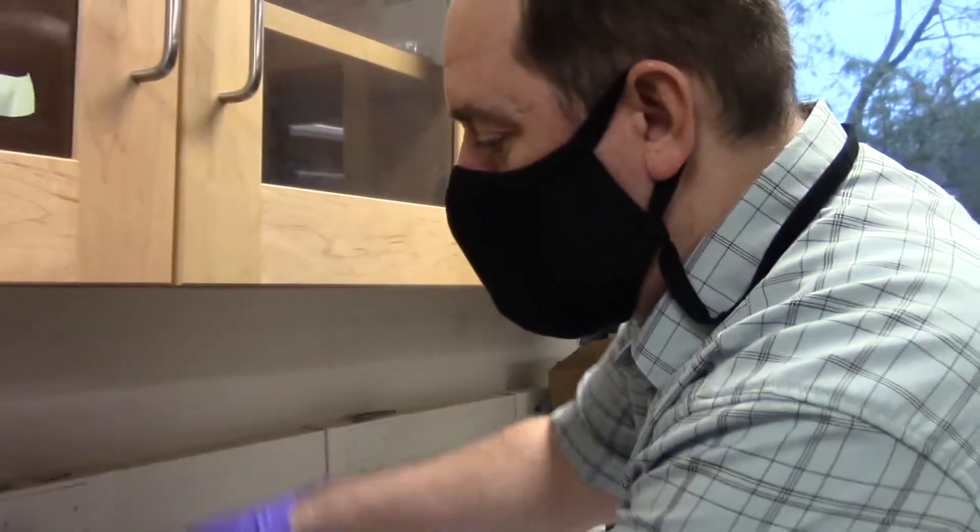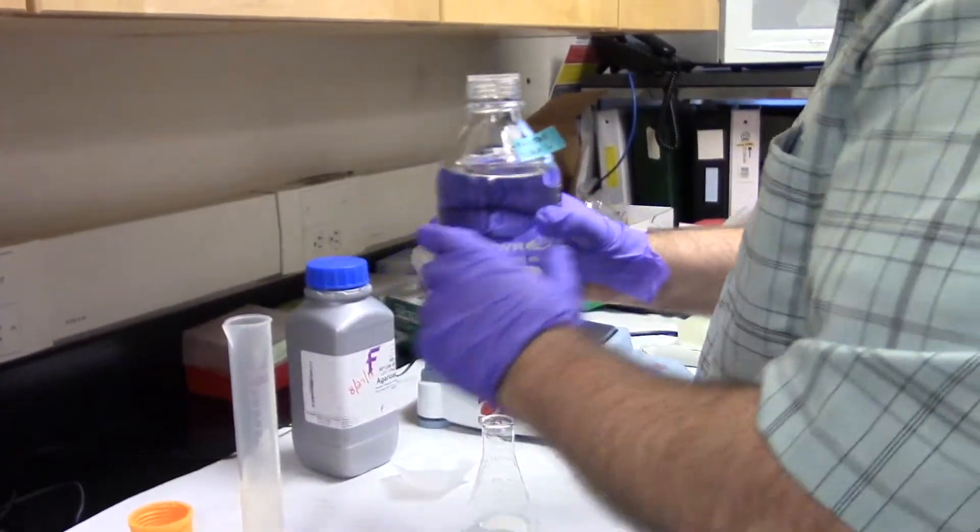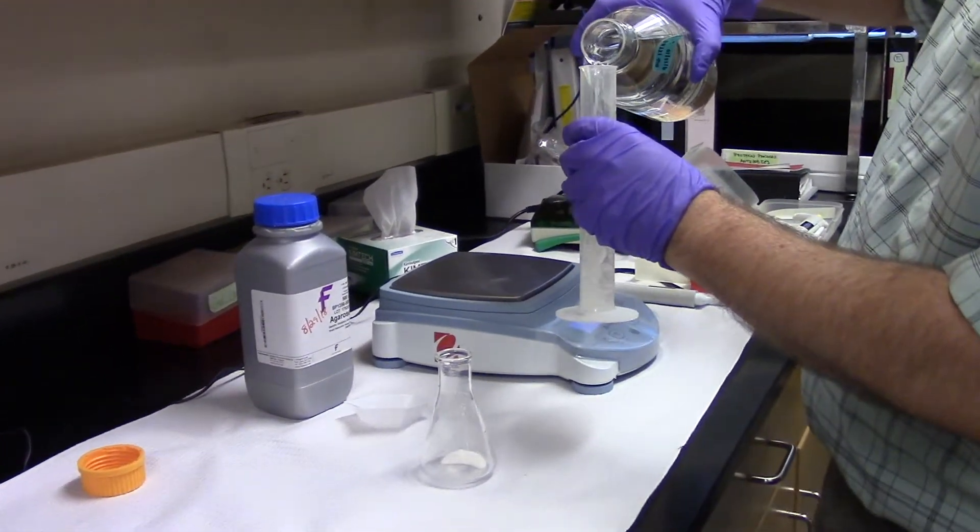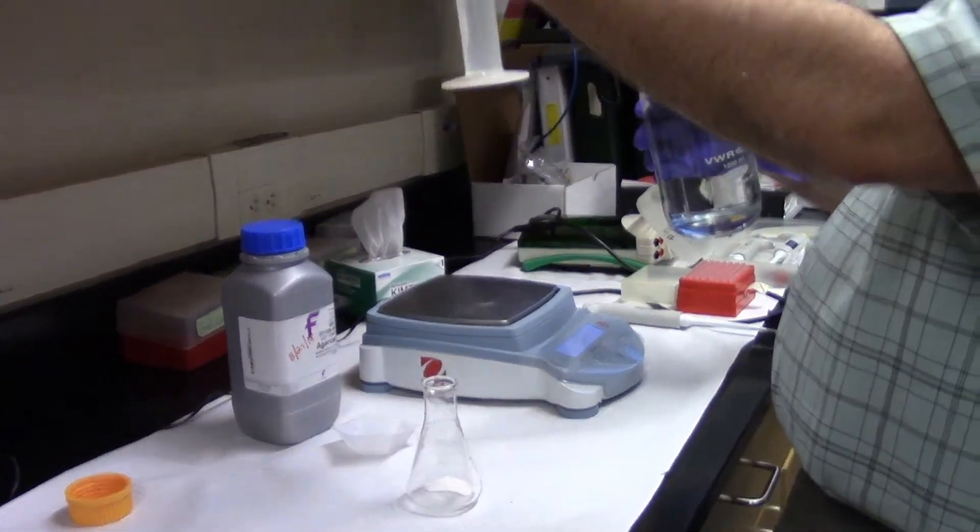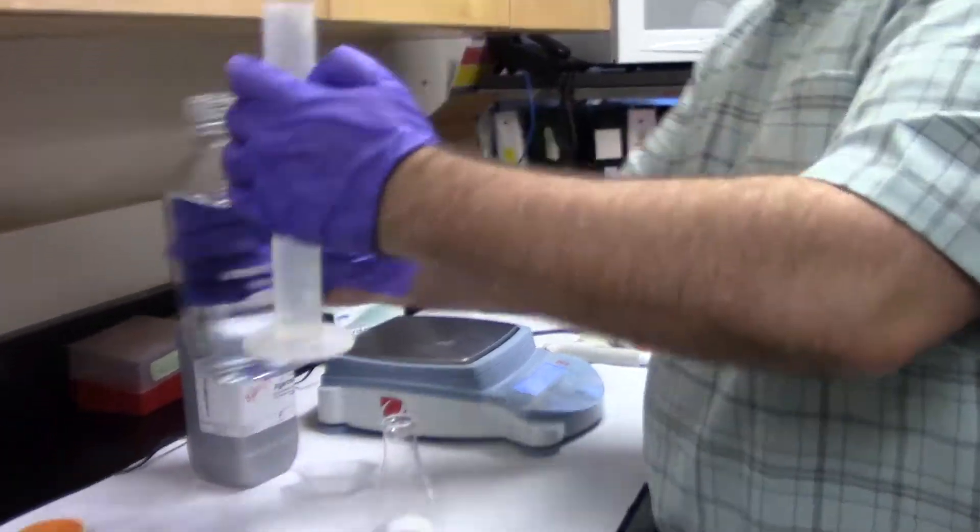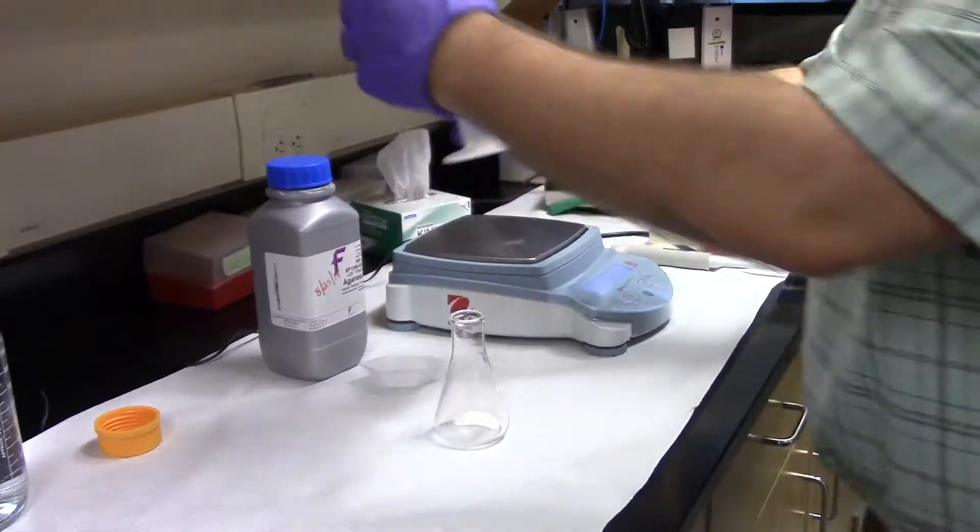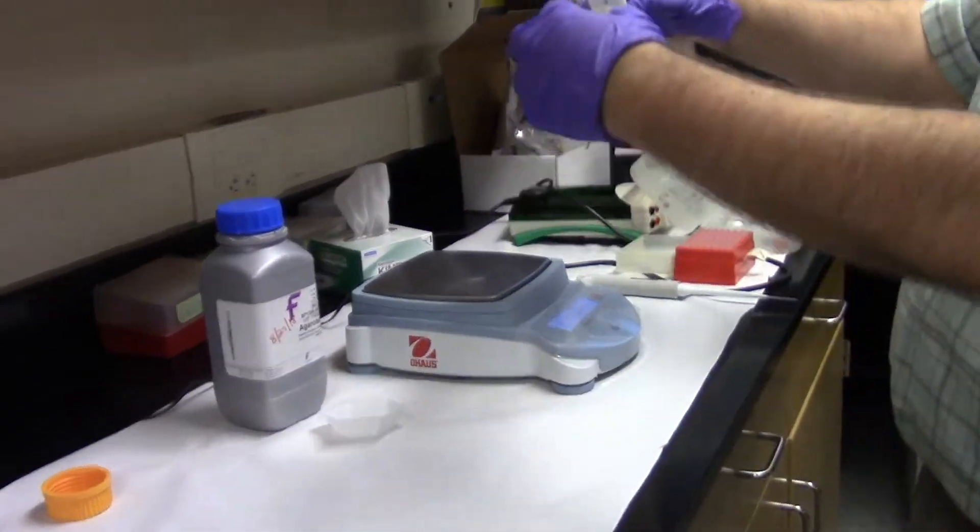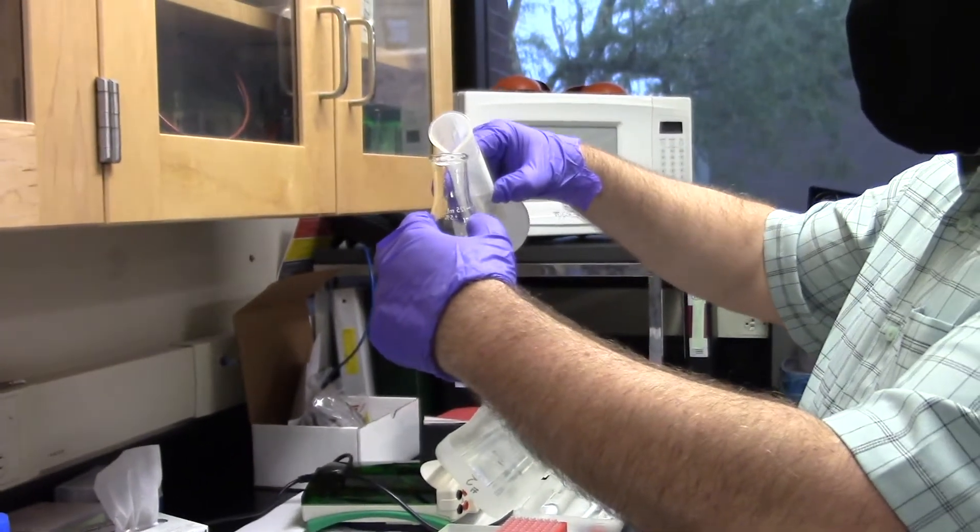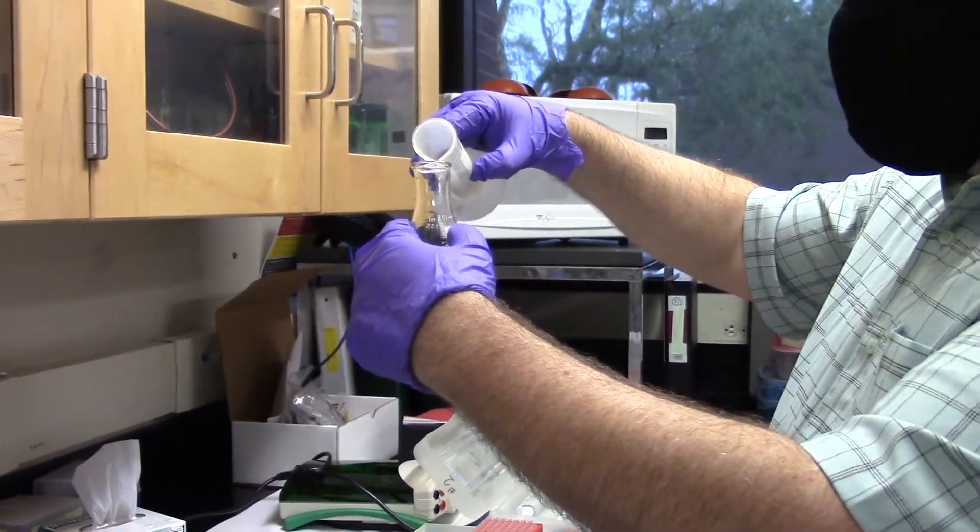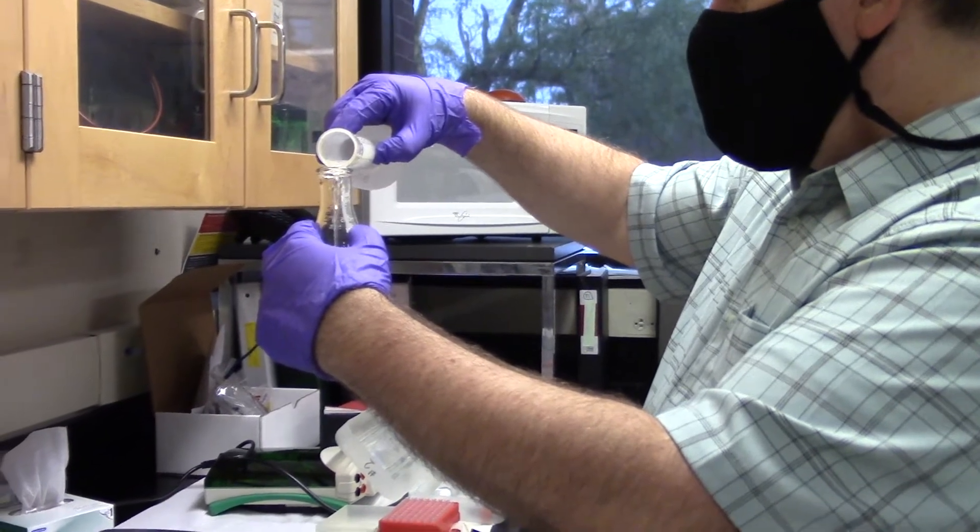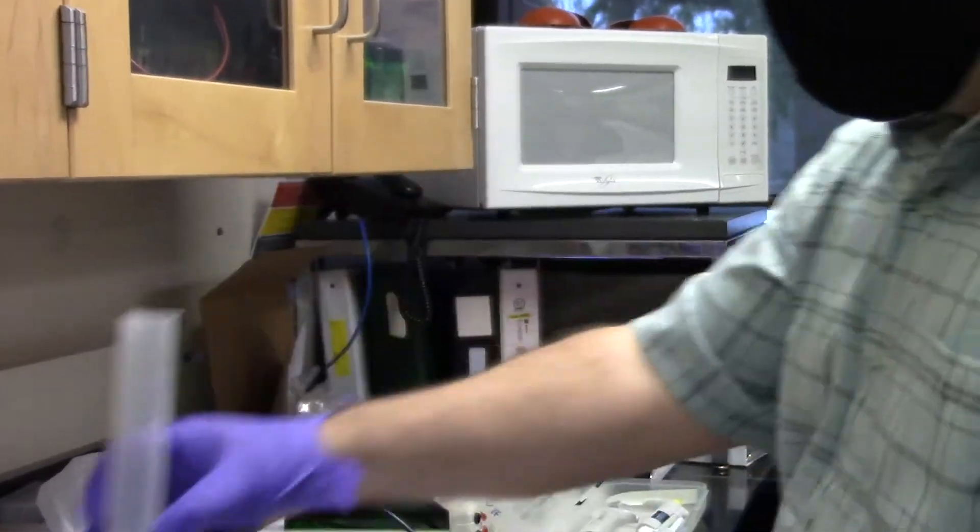So I've got a solution called TAE. It's tris acetic acid and EDTA. And I want about 40 mils of this solution. I'll measure out. Again, I got a little bit over 0.8 grams, and so a little bit over 40 mils will be perfect here.